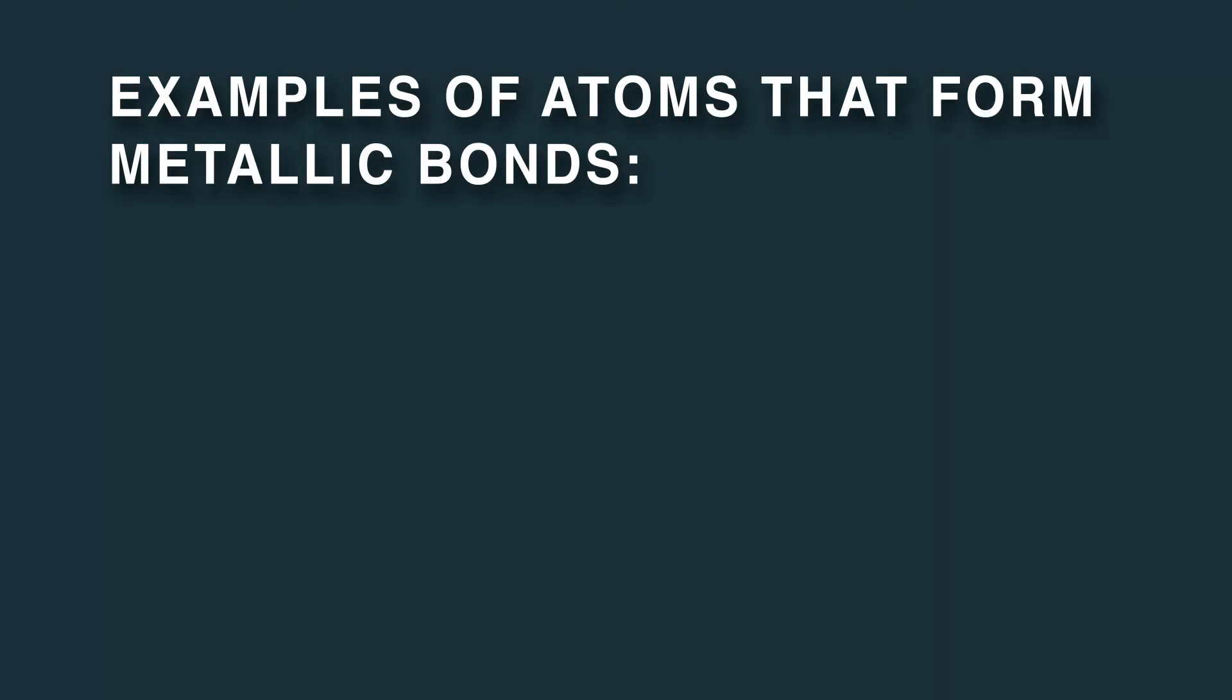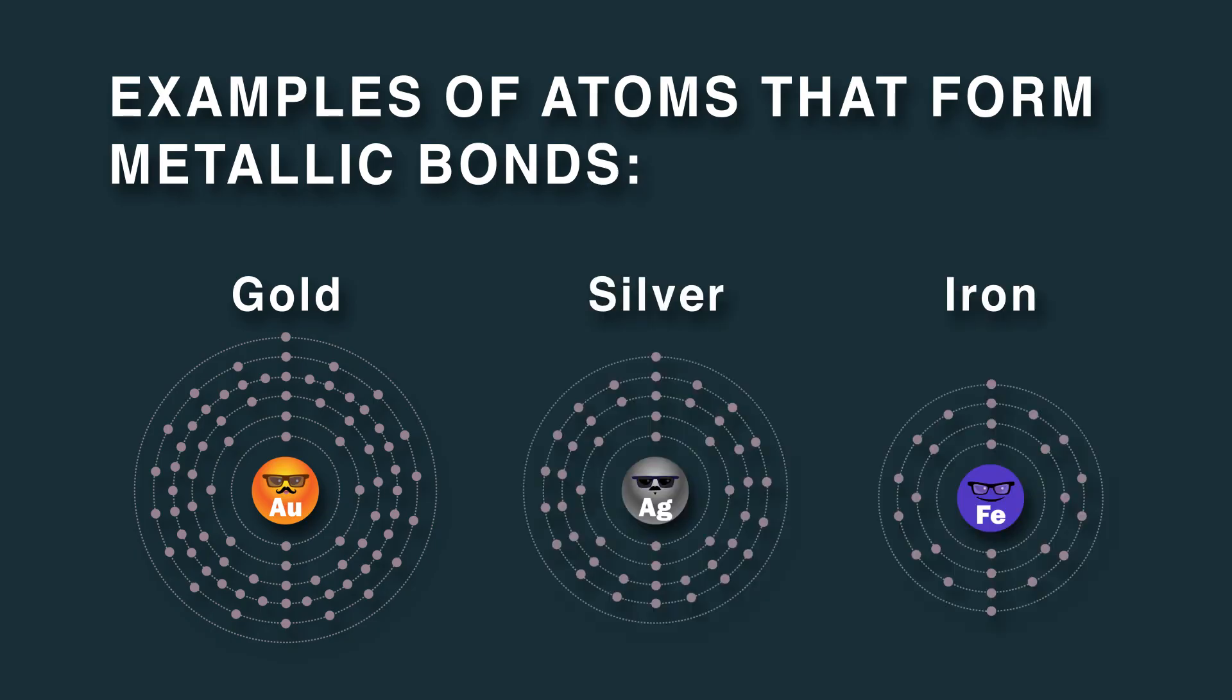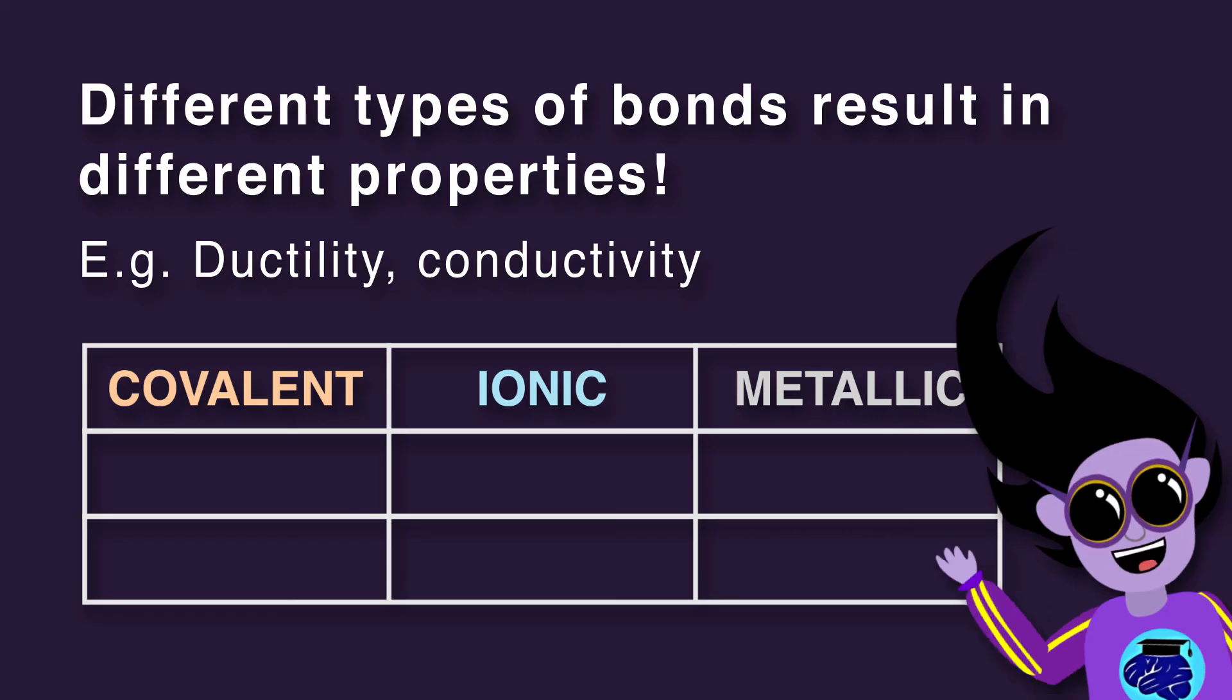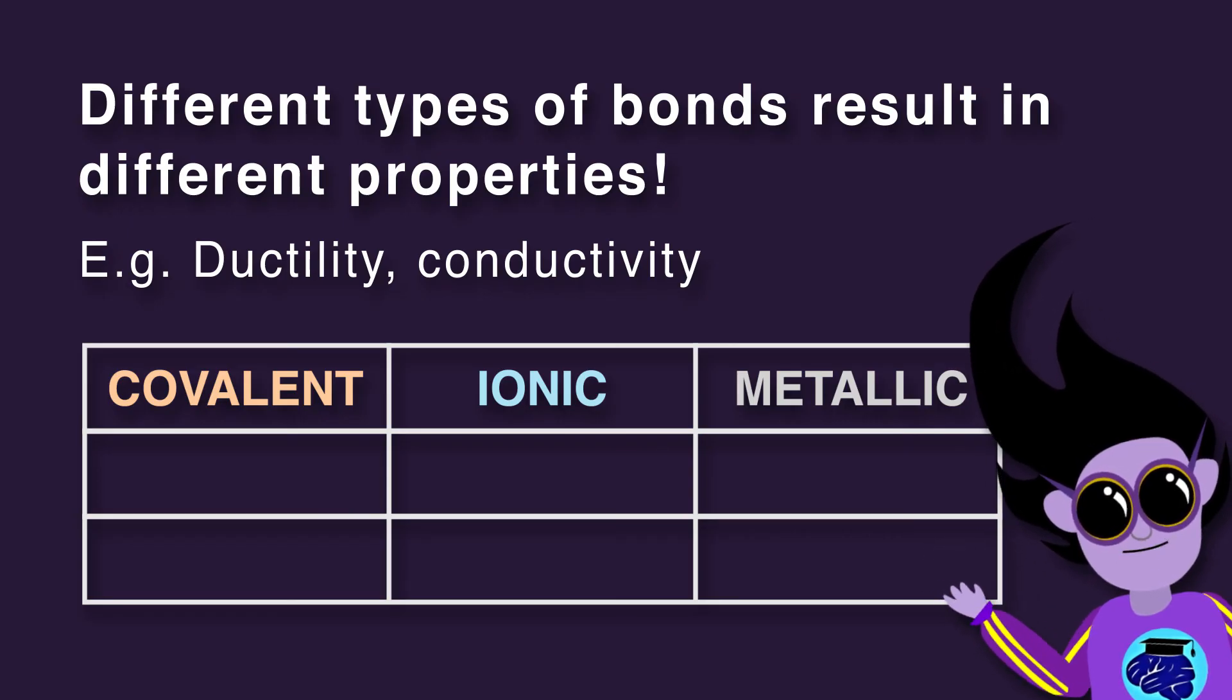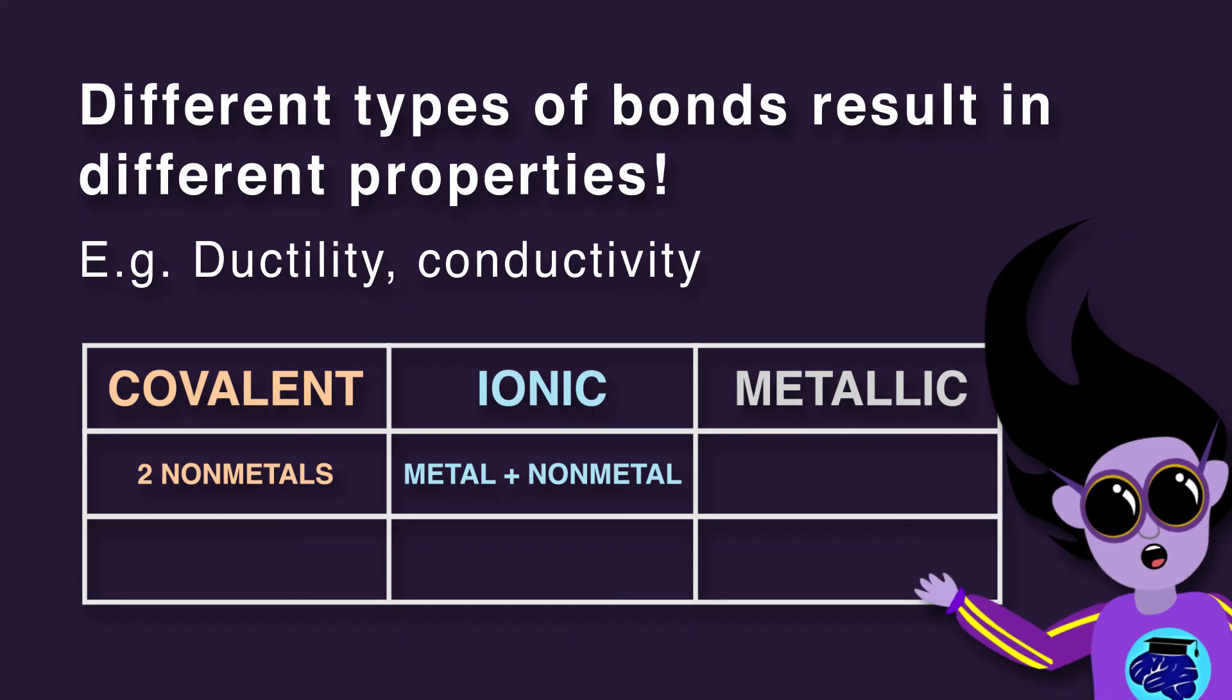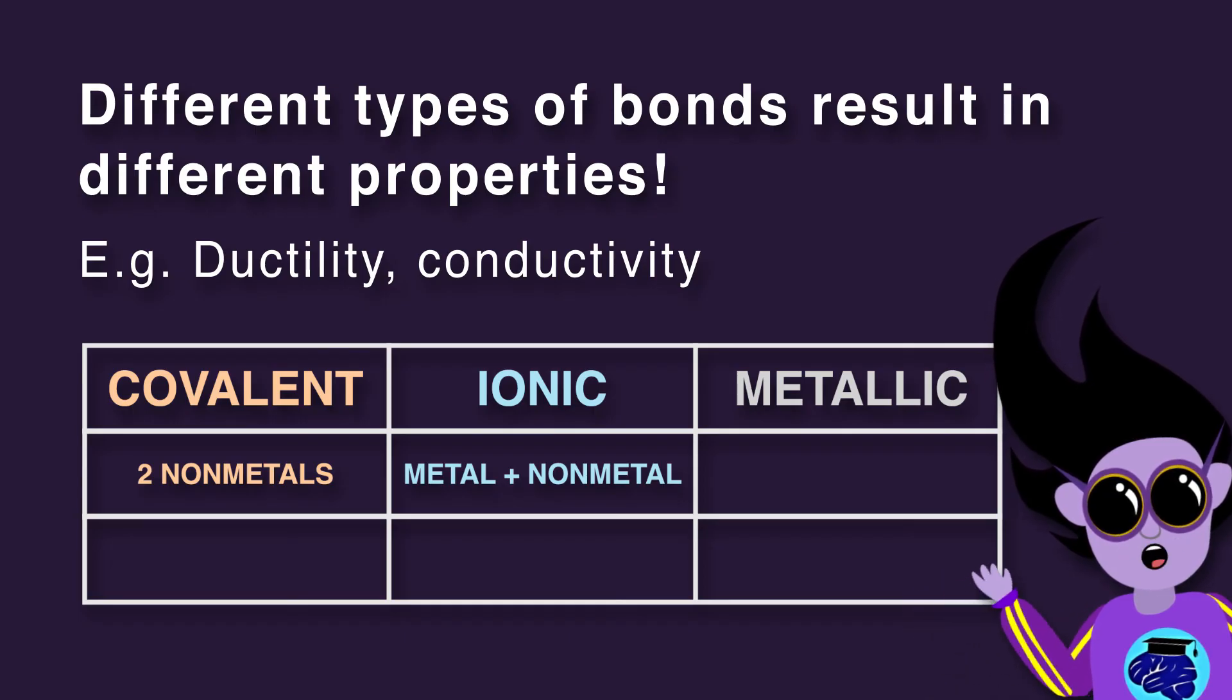Examples of metallic bonds include gold, silver, and iron. Different types of bonds result in different properties. It is important to remember that covalent bonds form between two nonmetals, ionic bonds between a metal and a nonmetal, and metallic bonds form with metals.